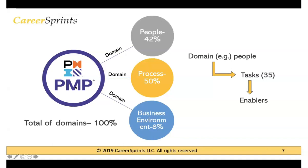What PMI has done with the 2021 version of the exam is that they have brought about a structural change to the PMP exam. The PMP exam is basically based on a document called the PMP Exam Content Outline, also called the PMP ECO. This exam content outline outlines all the different areas of project management that PMI is going to test you on in the PMP exam.